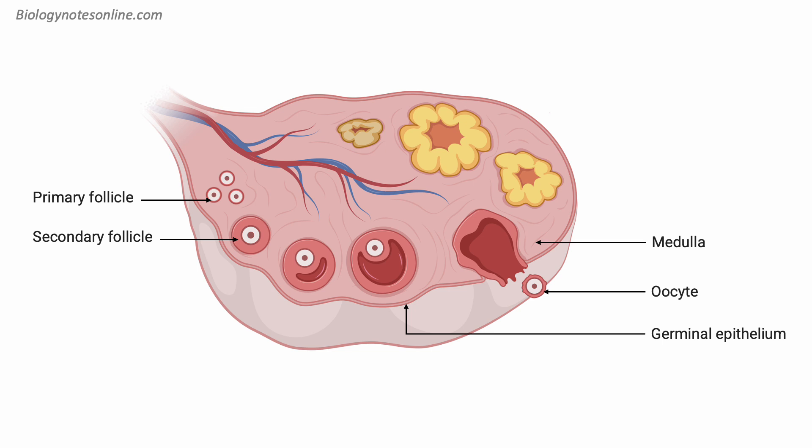The tertiary follicle is the largest and most developed type of follicle. The antrum expands, pushing the oocyte to one side. This follicle is now ready for ovulation. The pre-ovulatory follicle, also known as the Graafian follicle, is the final stage before ovulation. It's the largest follicle present, and it contains a mature oocyte ready to be released.